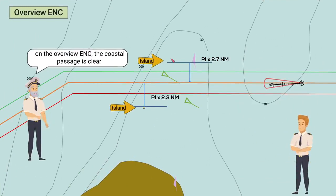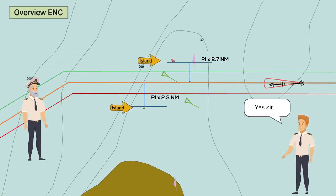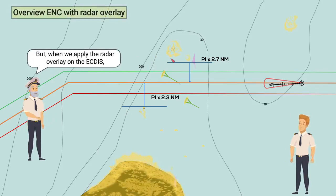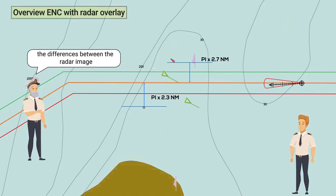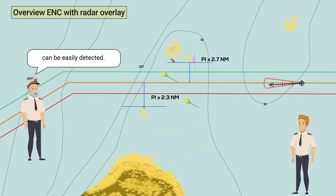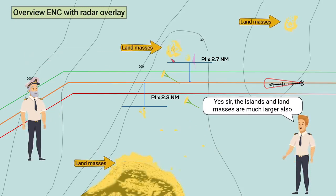As you can see here on the overview ENC, the coastal passage is clear with only small islands nearby. Yes, sir. But when we apply the radar overlay on the ECDIS, the differences between the radar image and ENC image of land masses, buoys, and similar objects can be easily detected. Yes, sir — the islands and land masses are much larger.